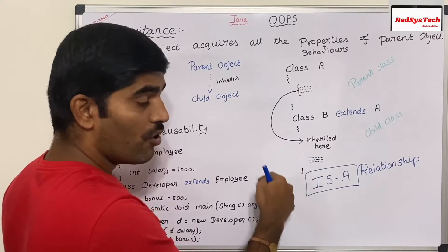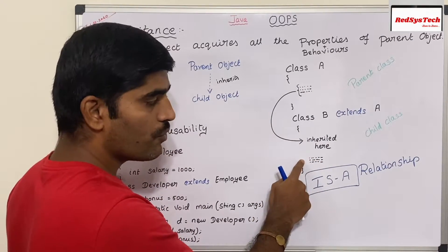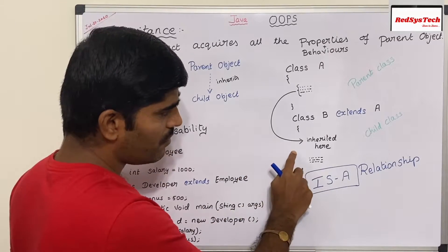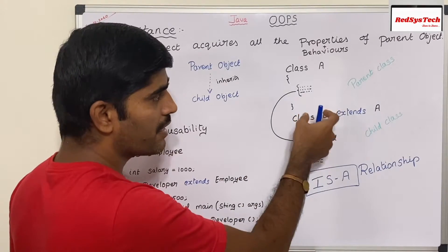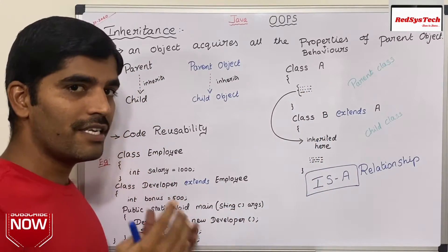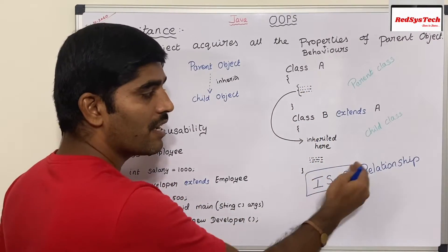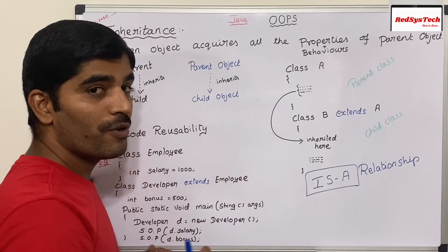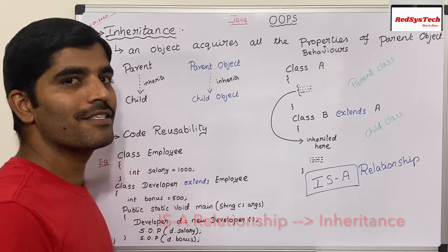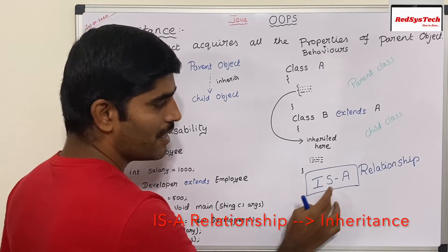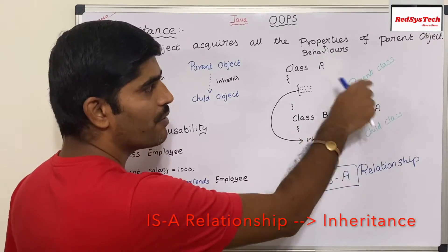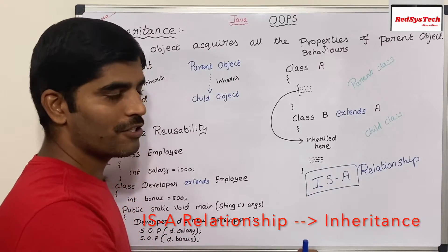We can also add extra code in class B — that's not a problem. Now, the way of inheriting properties from class A into class B, we call it inheritance. And this is called the IS-A relationship. So if someone asks you what is the IS-A relationship in Java, it's nothing but inheritance. The reason is the IS-A relationship means class B is of type A, and that is why it is called the IS-A relationship.